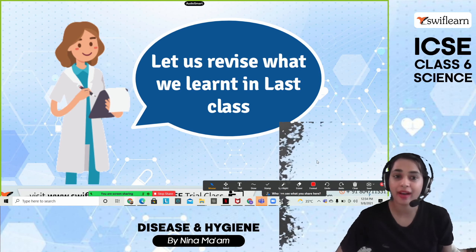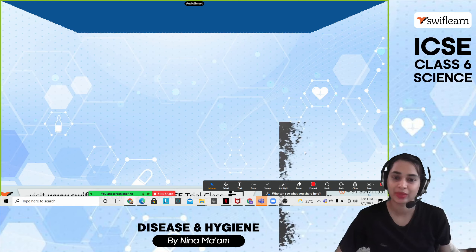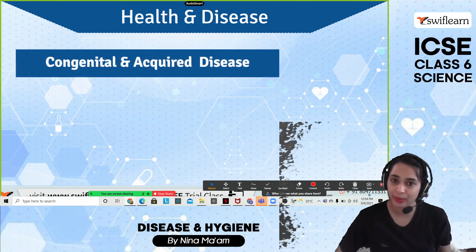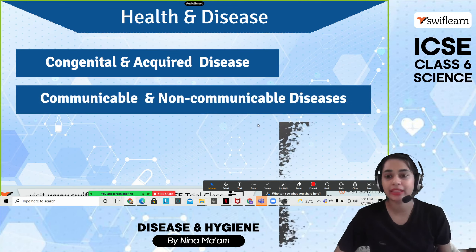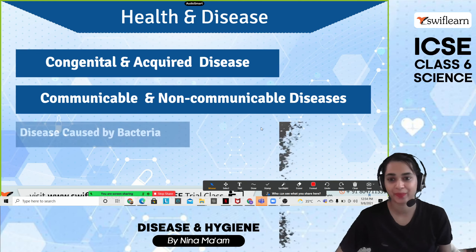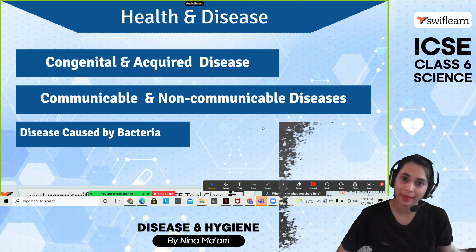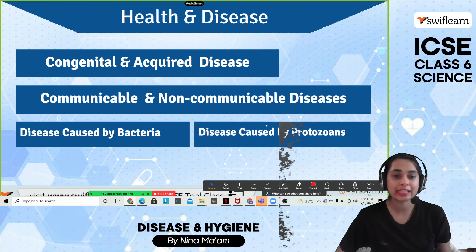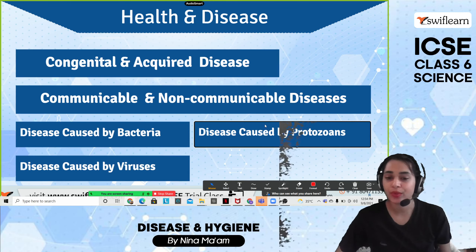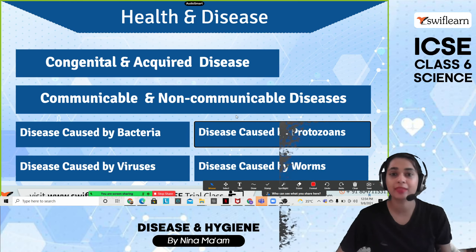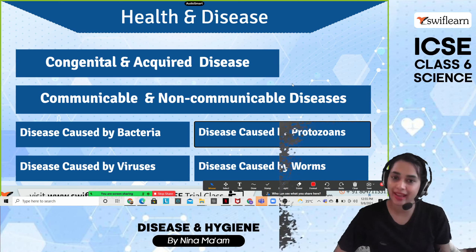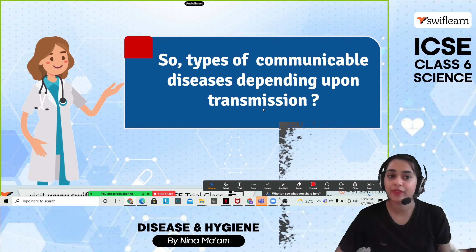Let's revise what we learned in the previous class. In part 1, we learned about congenital and acquired diseases, communicable and non-communicable diseases, diseases caused by bacteria, protozoans, viruses, and worms. Please revise it so you can get an idea about the coming chapter as well.